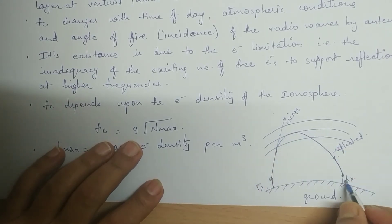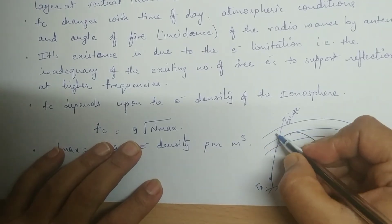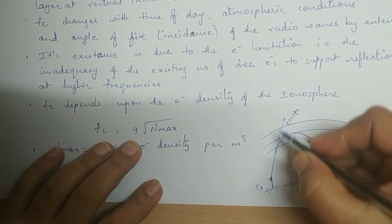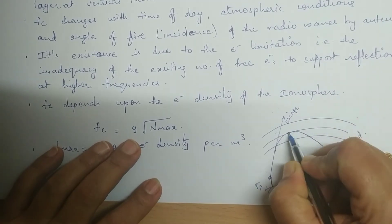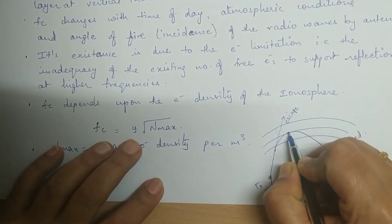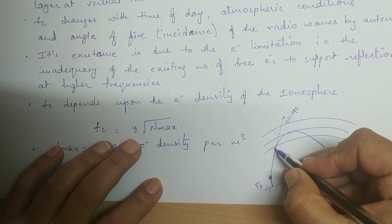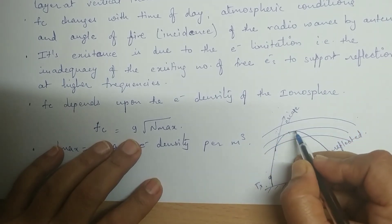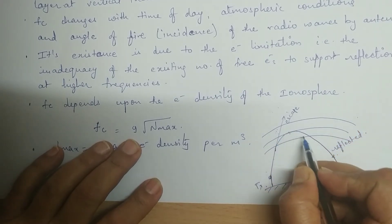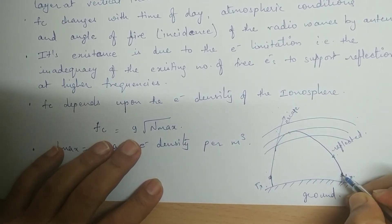In order to continue communication and receive a signal at the receiver, the necessary condition is that the frequency of the transmitted signal should be smaller than the critical frequency of the layer. If it is smaller, the signal will get reflected by that layer and will be observed at the receiver.